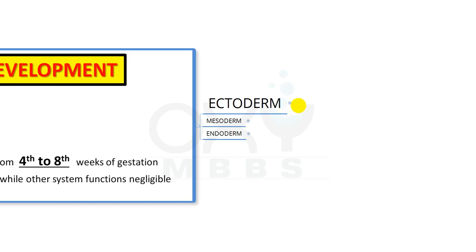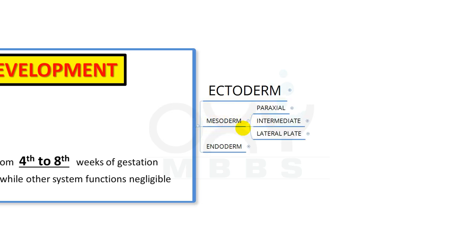In the last video we discussed the derivatives of the ectoderm germ layer, and now in this video we will discuss the derivatives of the mesoderm and the endoderm. Let's begin with the mesoderm. Mesoderm has three parts: para-axial mesoderm, intermediate mesoderm, and lateral plate mesoderm.